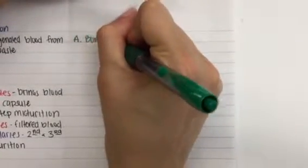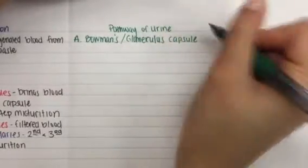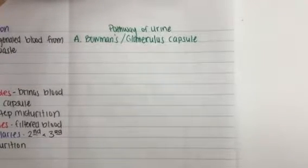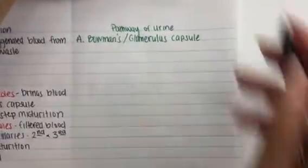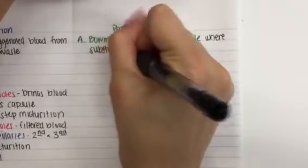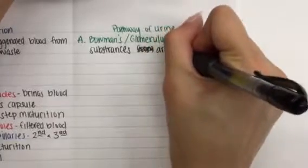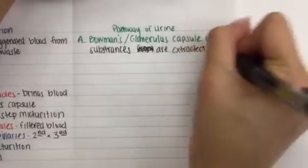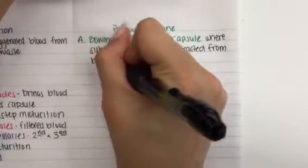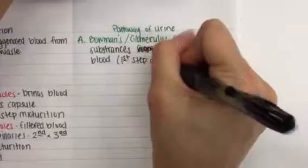Letter A. Bowman discovered it, he gets to name it after himself. It's also called the glomerulus capsule. It's kind of like a cap that surrounds a glomerulus. I'm going to add a little note for glomerular capsule. This is where substances are extracted from blood. I'll specify those substances later. Where substances are extracted from blood.